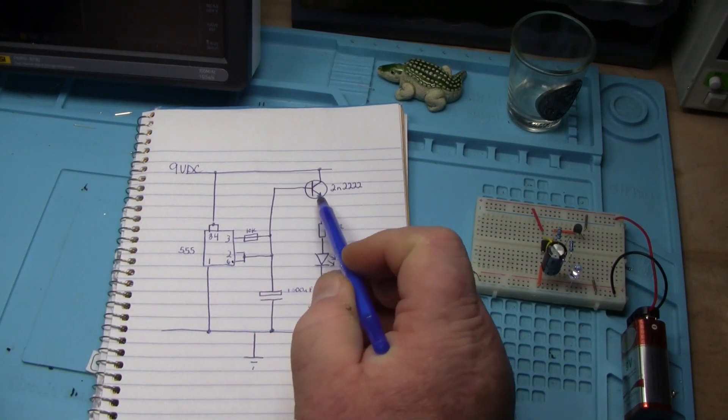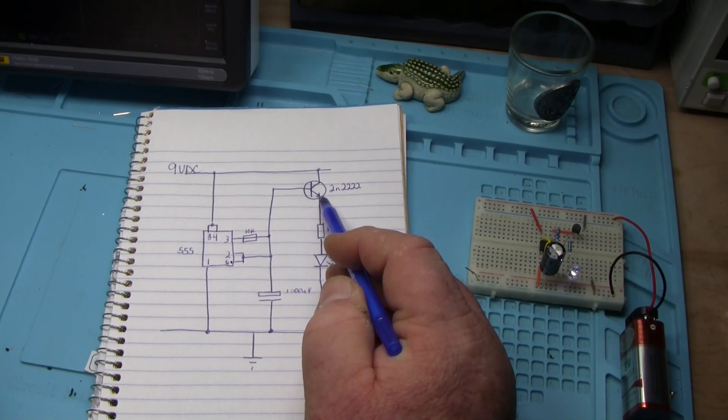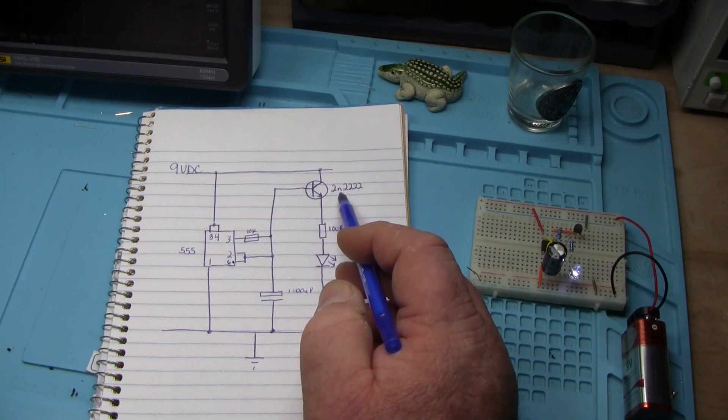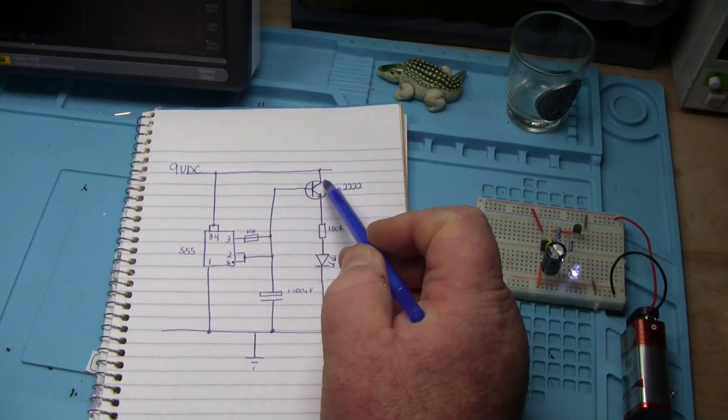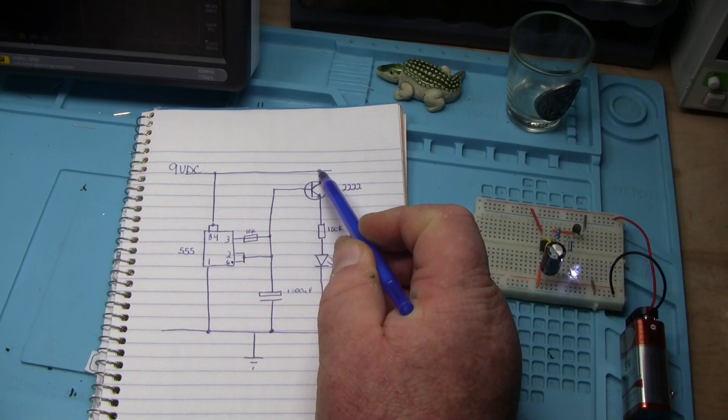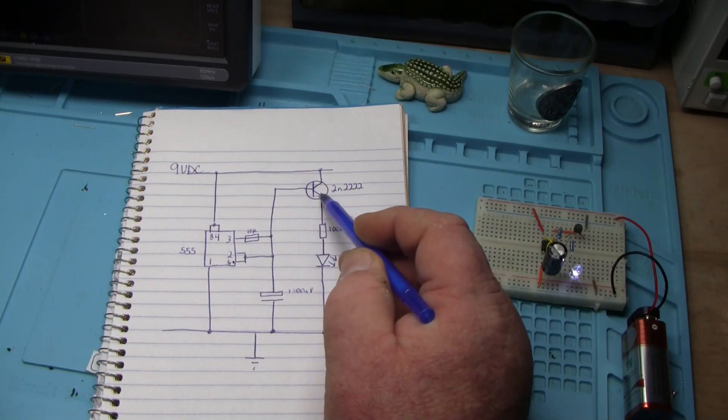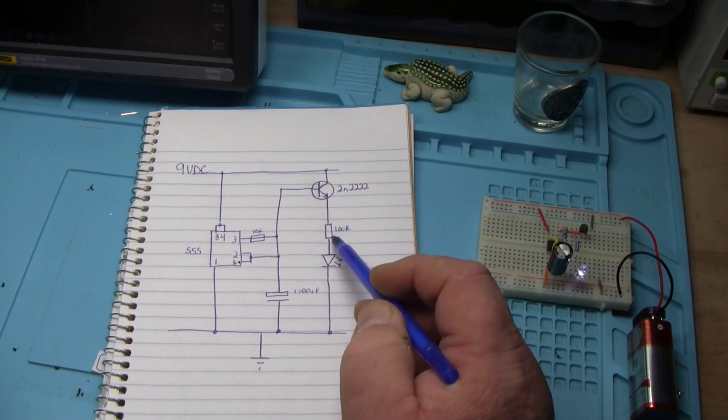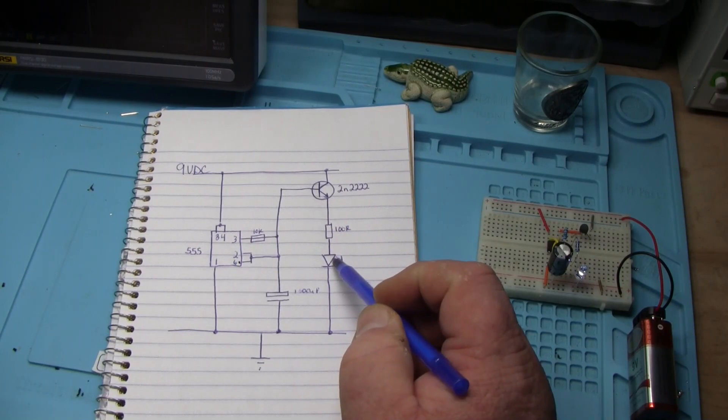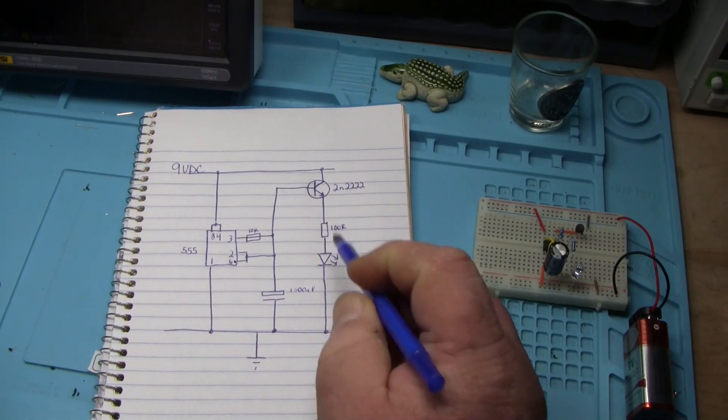Now, we have a 2N2222 transistor up here. You can use any NPN transistor that you have on hand. The collector goes to VCC, the emitter goes to 100 ohm current limiting resistor for the LED, which goes to ground.